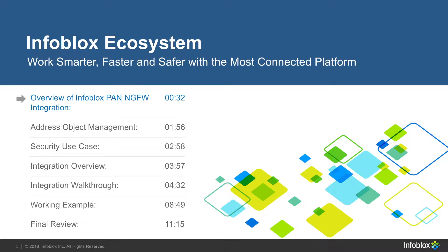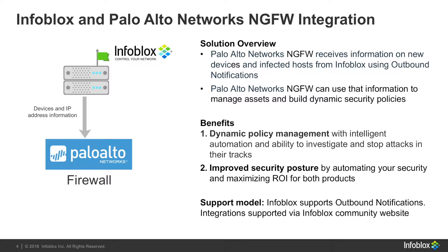Now, let's start with an overview. With App on API, we're now able to respond faster to network changes with the help of Infoblox's ecosystem license. Using Palo Alto Network's Next-Gen Firewall, admins can now automate DNS security with the ability to stop attacks immediately without intervention, maximizing ROI for both Palo Alto Network's Next-Gen Firewall and Infoblox.